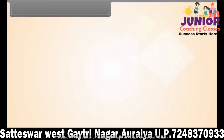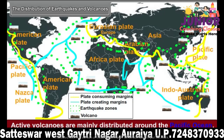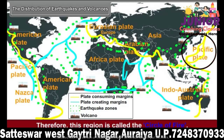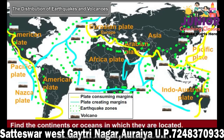The distribution of earthquakes and volcanoes. Earthquakes and active volcanoes mainly occur in the areas of plate margins. Active volcanoes are mainly distributed around the Pacific Ocean; therefore, this region is called the Circle of Fire. Figure 6.5 shows the global distribution of earthquakes and volcanoes, with a few major volcanoes named. Find the continents or oceans in which they are located.